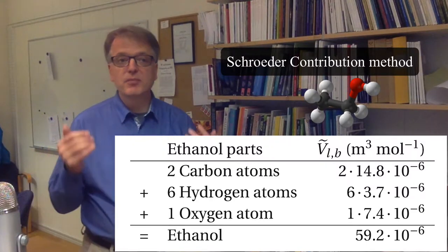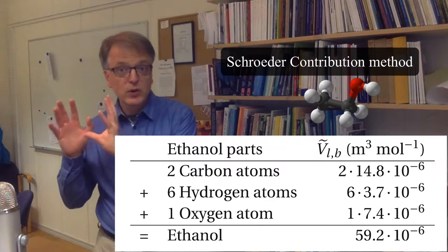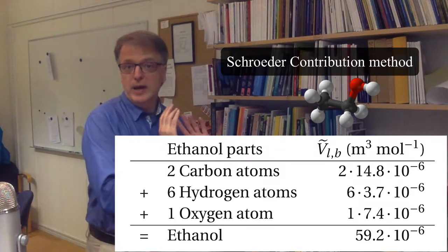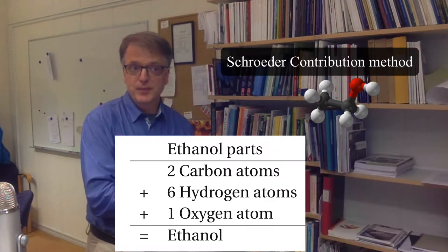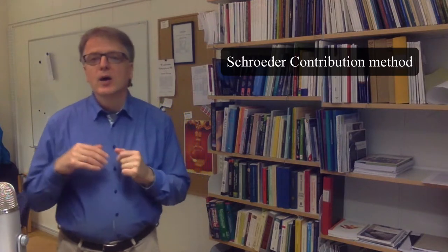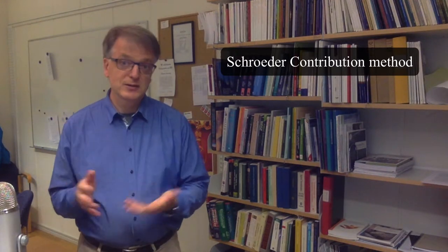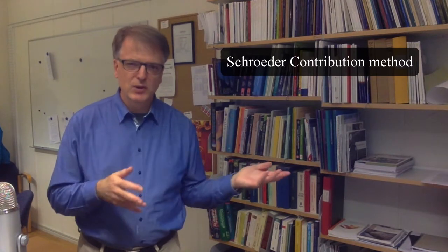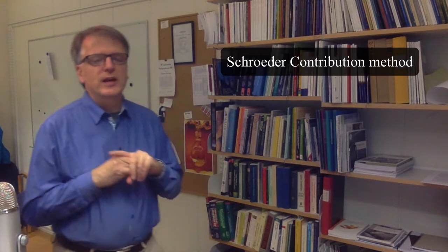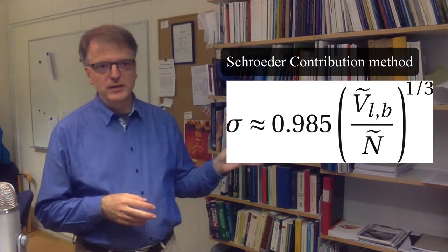Now you have estimated the molar volume. So how to go from that to a characteristic collision diameter? You could consider close packing of spheres, which is a bit odd since the molecule isn't a sphere and you could consider other things.